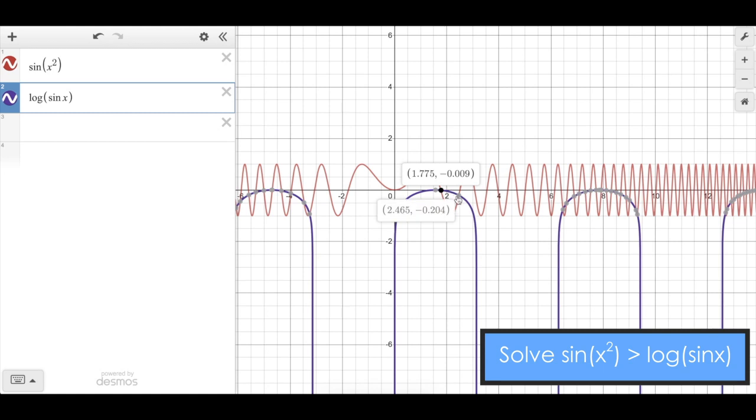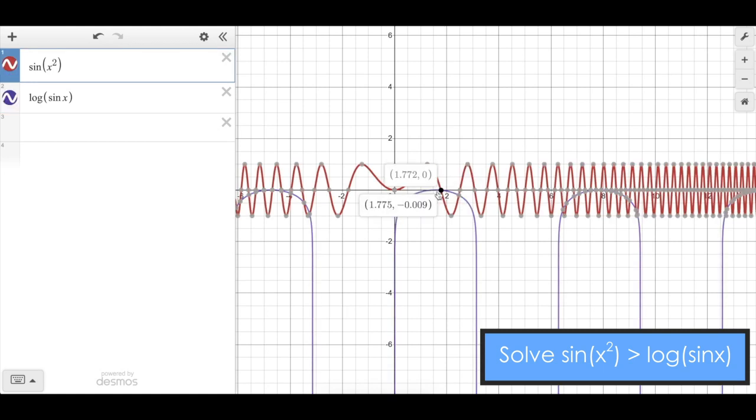Desmos will actually tell me the points where these functions intersect, meaning sine of x² is greater than log sine of x anywhere before this point until about this point. I'm not going to get specific with this problem; I just really want to show you how powerful this technology is.